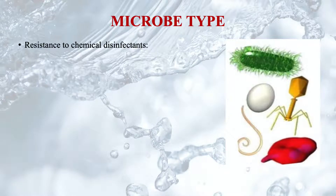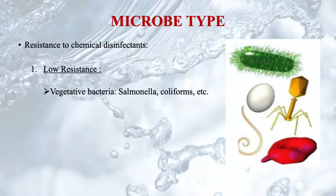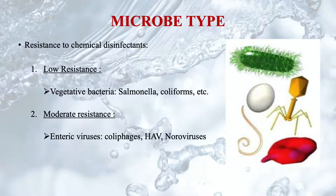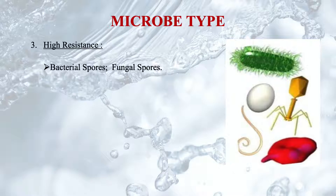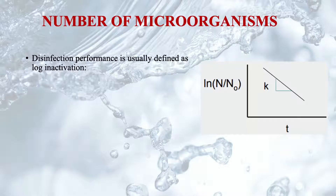The types of microbes — some of the microbes have low resistance to disinfection process and may be destroyed easily, while a number of microorganisms are highly resistant to many disinfectants and may require high dosages of intensive disinfectants. Their resistance to chemical disinfectants may be categorized as low, moderate, and high. Vegetative bacteria, salmonella, coliforms, etc., have low resistance. Enteric viruses such as coliphages, HAV, and noroviruses are moderately resistant. Bacterial and fungal spores, protozoan cysts, helminth ova, etc., show very high resistance to the disinfection process.